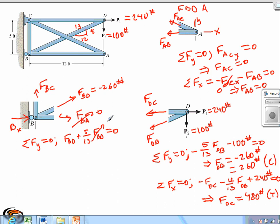We find that FBC is equal to 100 pounds. And since it's positive, this will be in tension.